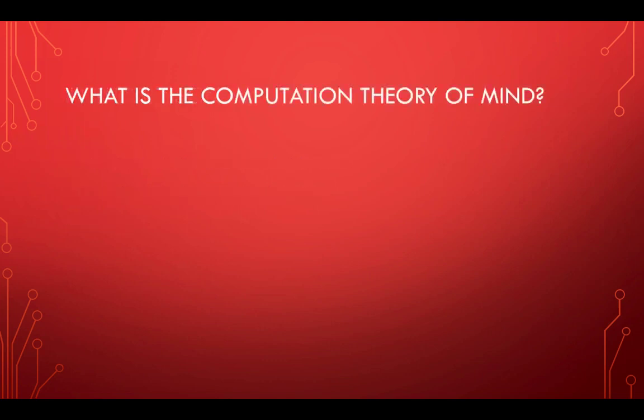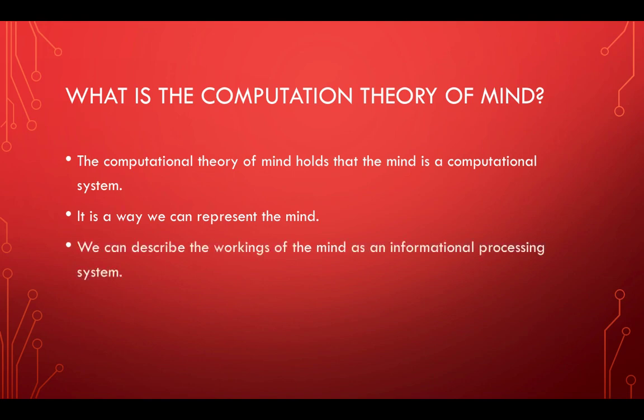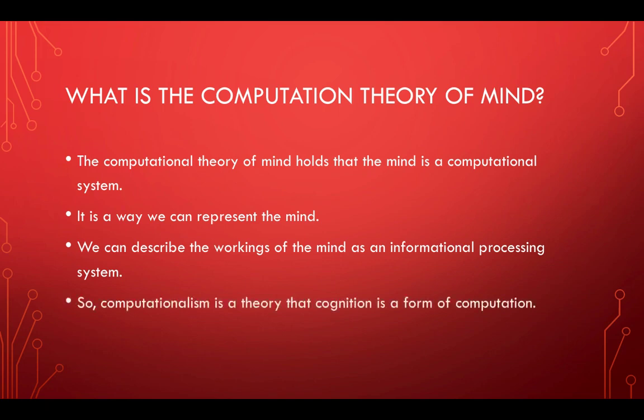So fundamentally, what is the computational theory of mind? It's the idea that the mind is like a computational system — a way we can represent understanding of the mind. We can think of the mind as thinking like a computer, and describe its workings as almost like an information processing system. Computationalism is the theory that cognition is a form of computation, that our brains work like a computer.